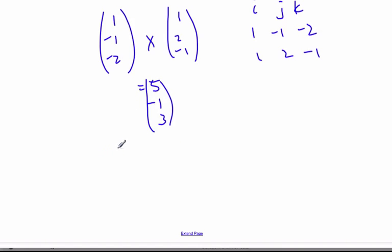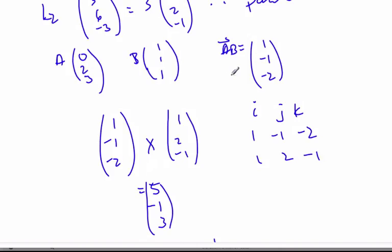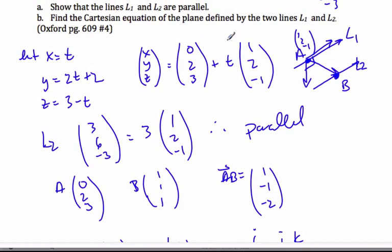And so I can say that 5x minus y plus 3z is equal to, let's say, d. Plug in any point. I can use this point here, 0, 2, 3.